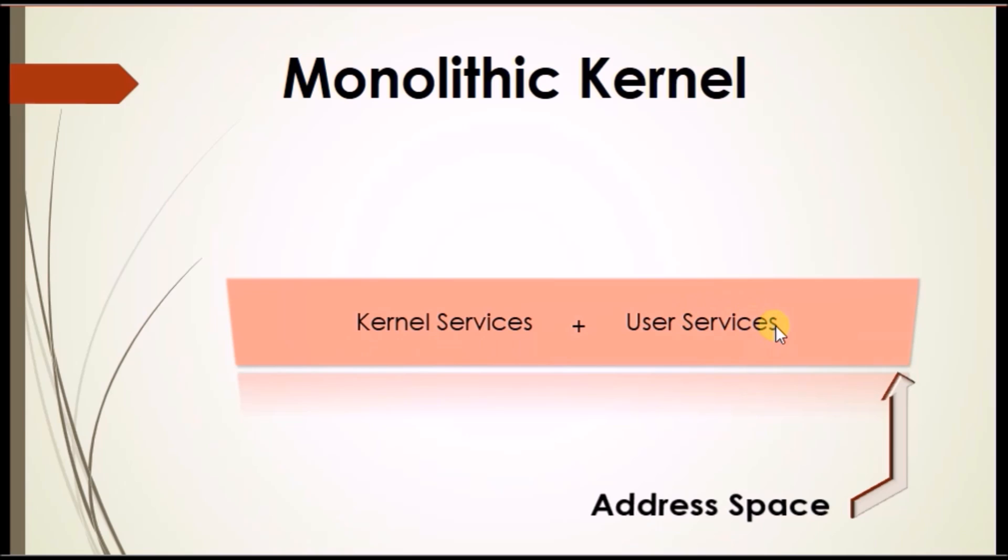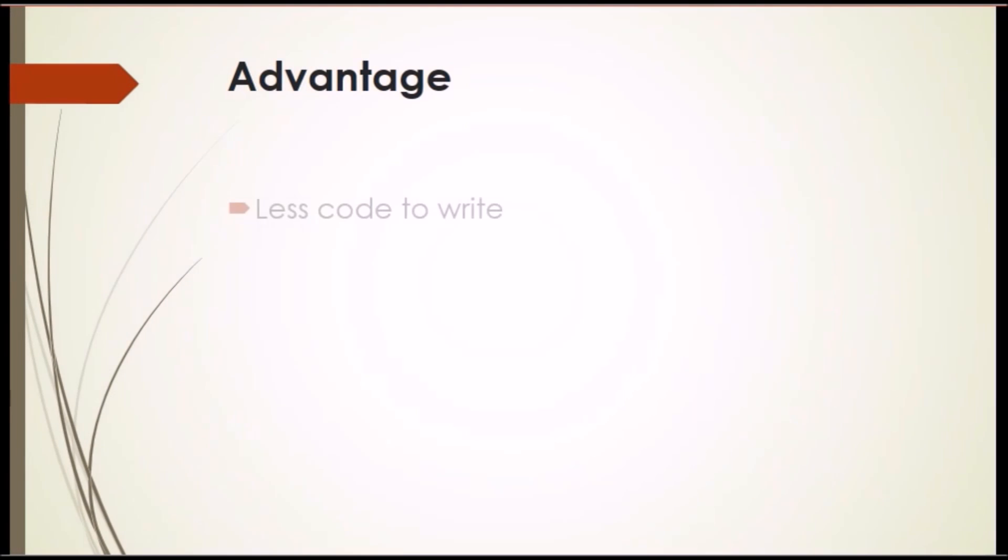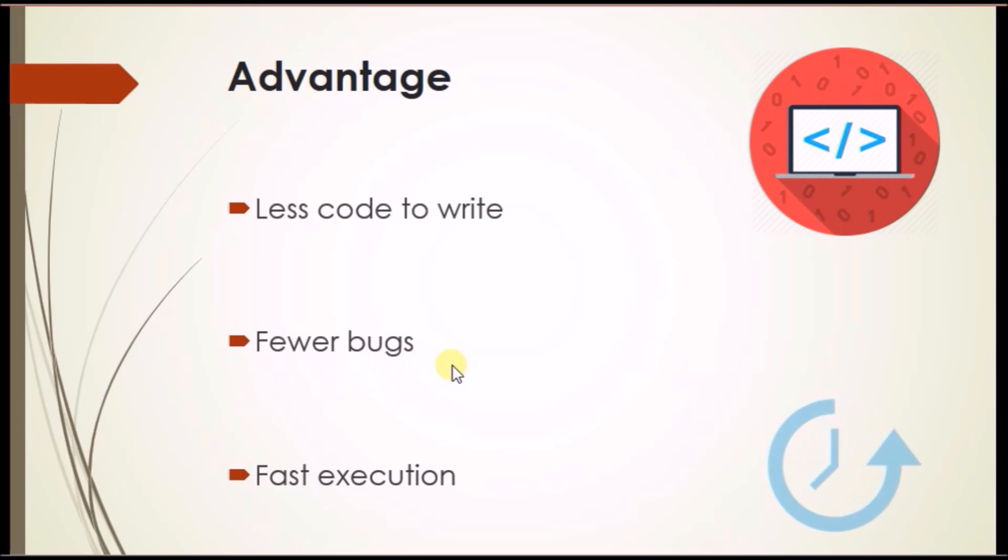Taking this to the next level, let's talk about advantages. So the first, it takes less code to write a monolithic kernel. Second, it has relatively fewer bugs since the only way to contact between services is using execution flow. Third, they are also relatively fast since user services and kernel services are in the same address space.